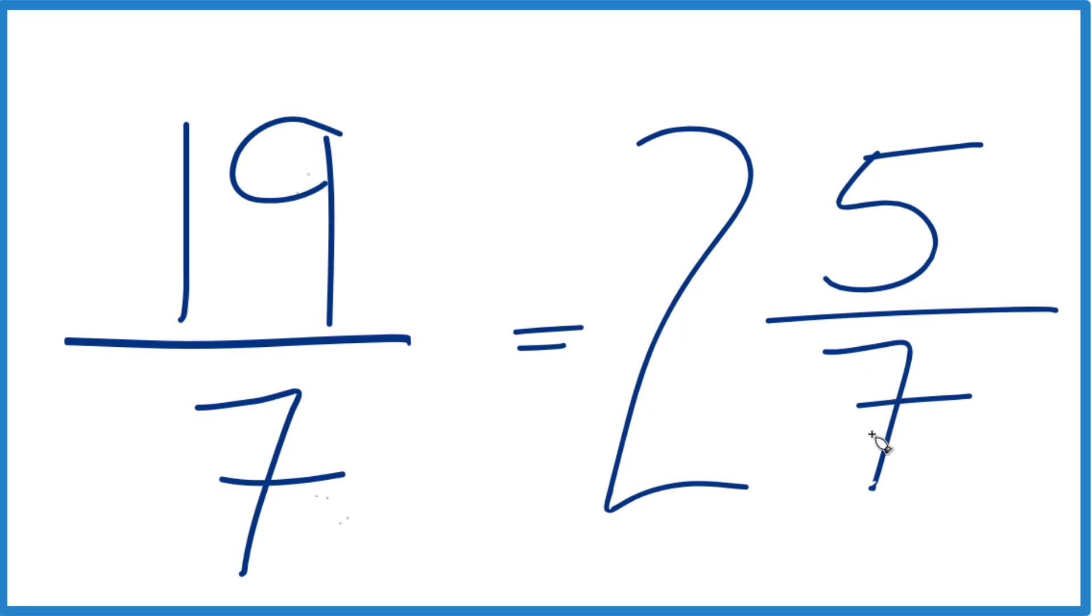2 times 7 is 14. 14 plus 5, that's the 19. And we just keep the denominator the same.